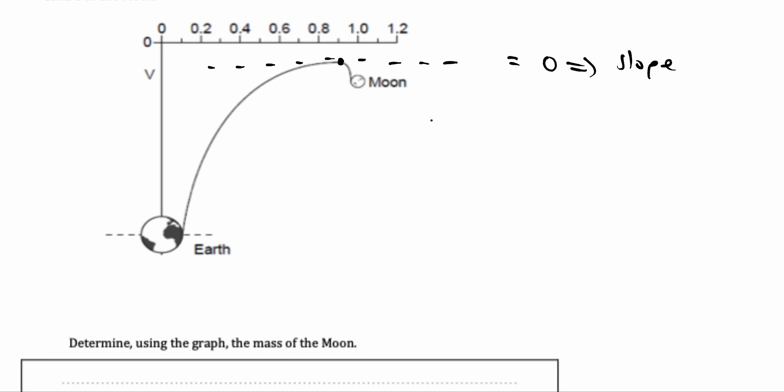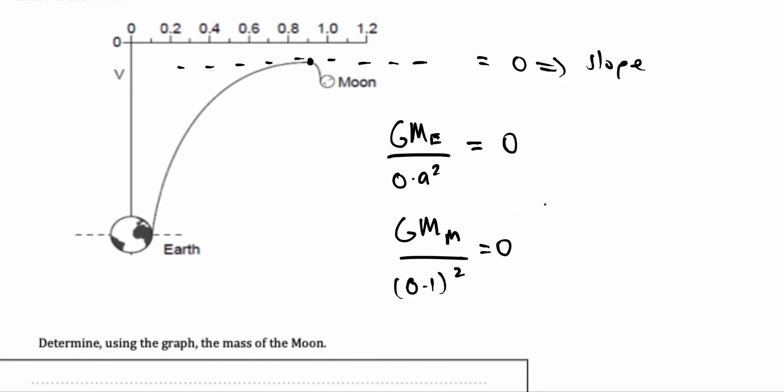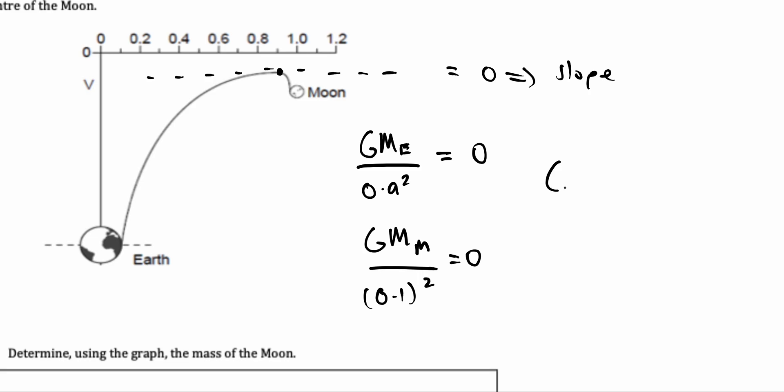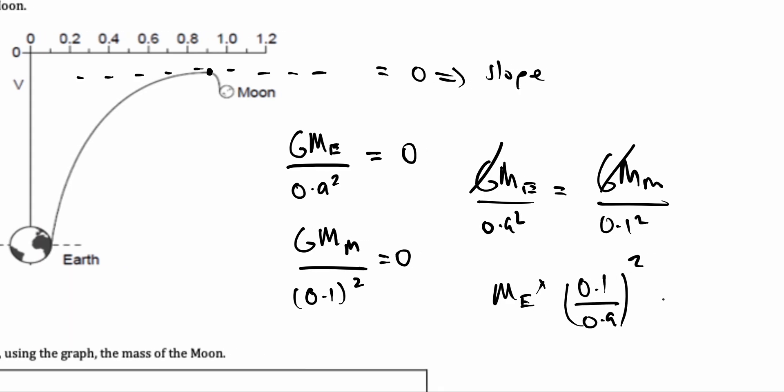What does this look like? We know that g, the mass of the Earth over the radius, in this case is 0.9 square, is equal to zero. We also know that g, mass of the Moon, over 0.1 whole square is equal to zero. As they're both equal to zero, we can simply just equate them to each other. So, g mass of the Earth over 0.9 square is equal to g mass of the Moon over 0.1 square. g and g cancel as they're constants. We want to solve for the mass of the Moon. So we know that mass of the Earth times 0.1 over 0.9 whole square will give us our answer for the Moon.